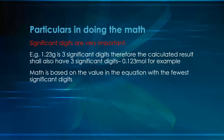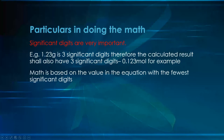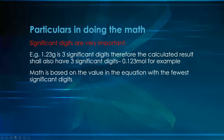A note on significant digits: 1.23 grams is three significant digits. You're basically going to want your answer to be in the same number of significant digits as your input. Whatever number has the most decimal places, I tend to make the answer in the same number of decimal places — three significant digits in, three significant digits out. That kind of thing.